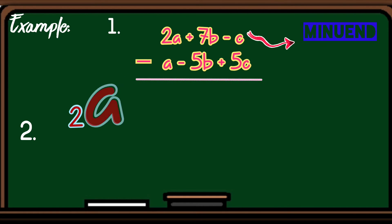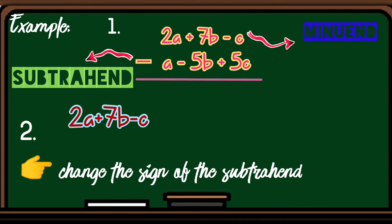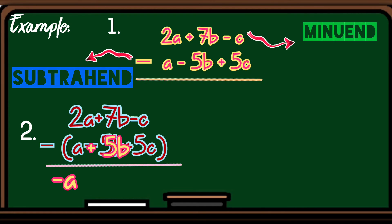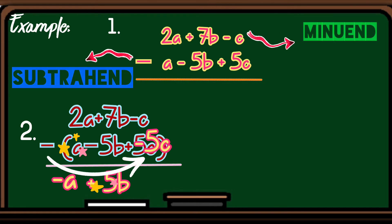So, next, copy the minuend 2a plus 7b minus c, then susundin natin yung rules ng subtractions of algebraic expressions na change the sign of the subtrahend. So, negative times positive a ay magiging negative a, negative times negative 5b ay magiging positive 5b, negative times positive 5c ay magiging negative 5c.